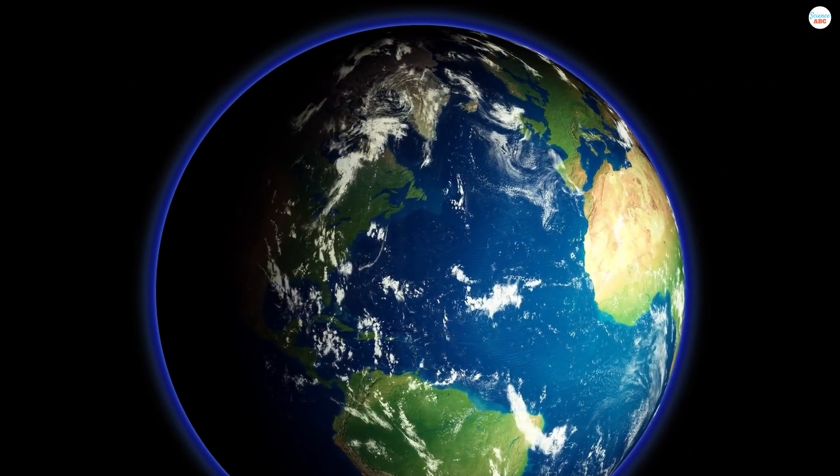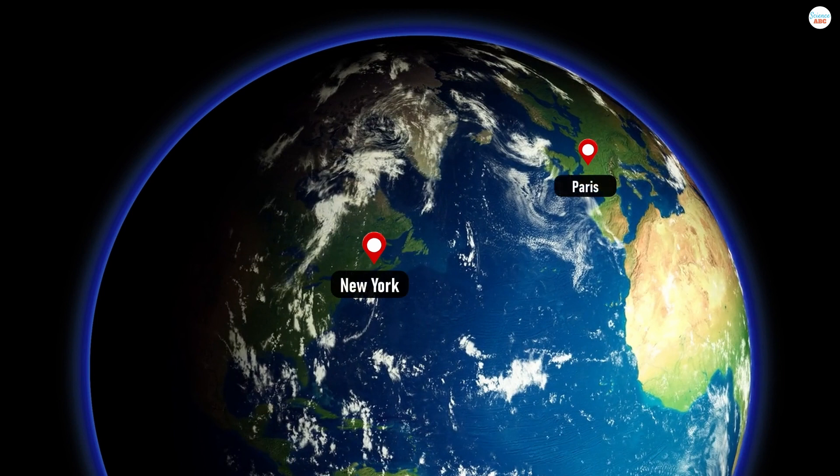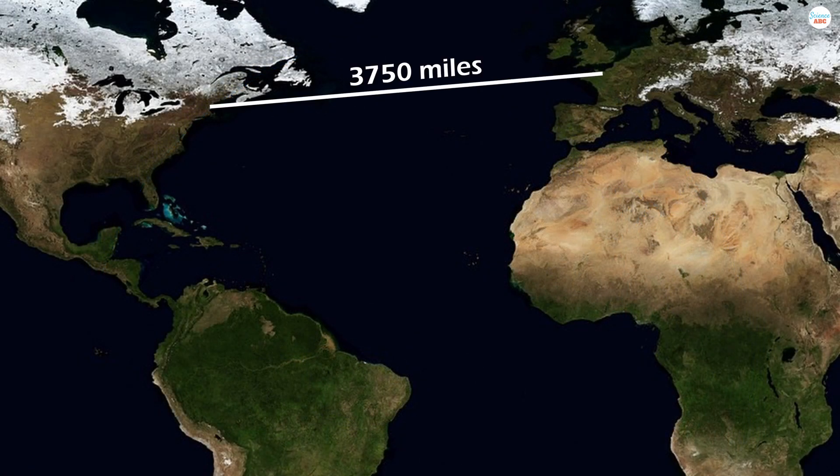On a globe, the shortest distance between New York and Paris would be an arc of roughly 3,630 miles, but the same arc, when projected on a 2D map, transforms into a straight line measuring approximately 3,750 miles.